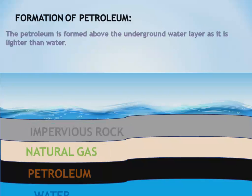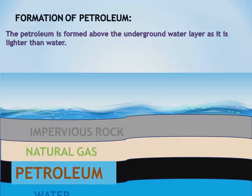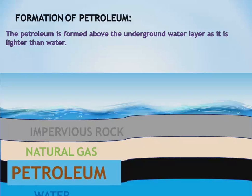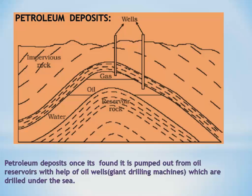Petroleum is formed above the underground water layer, as it is lighter than water. Once petroleum deposits are found by surveys, the oil is pumped out from oil reservoirs with the help of oil wells — that is giant drilling machines which are drilled under the sea.